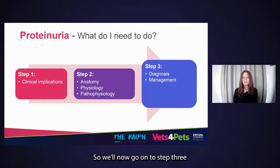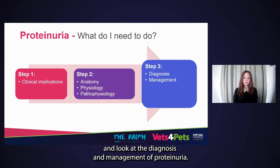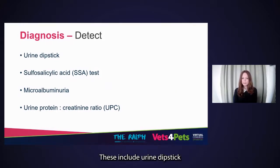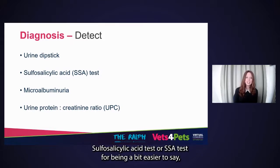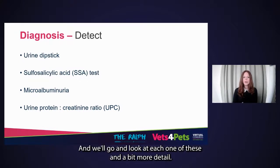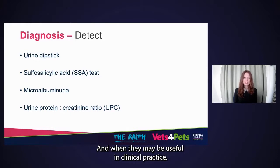We'll now move on to step three: diagnosis and management of proteinuria. There are numerous methodologies available for the detection of proteinuria. These include urine dipstick, the sulfosalicylic acid or SSA test, microalbuminuria testing, or the urine protein creatinine ratio. We'll look at each one of these in more detail and when they may be useful in clinical practice.